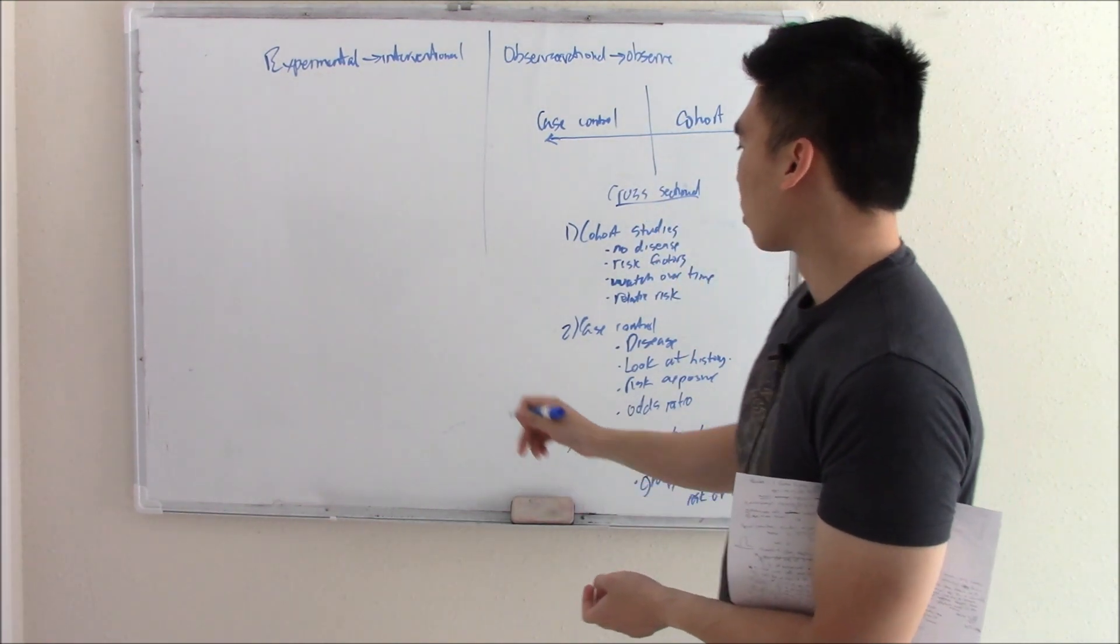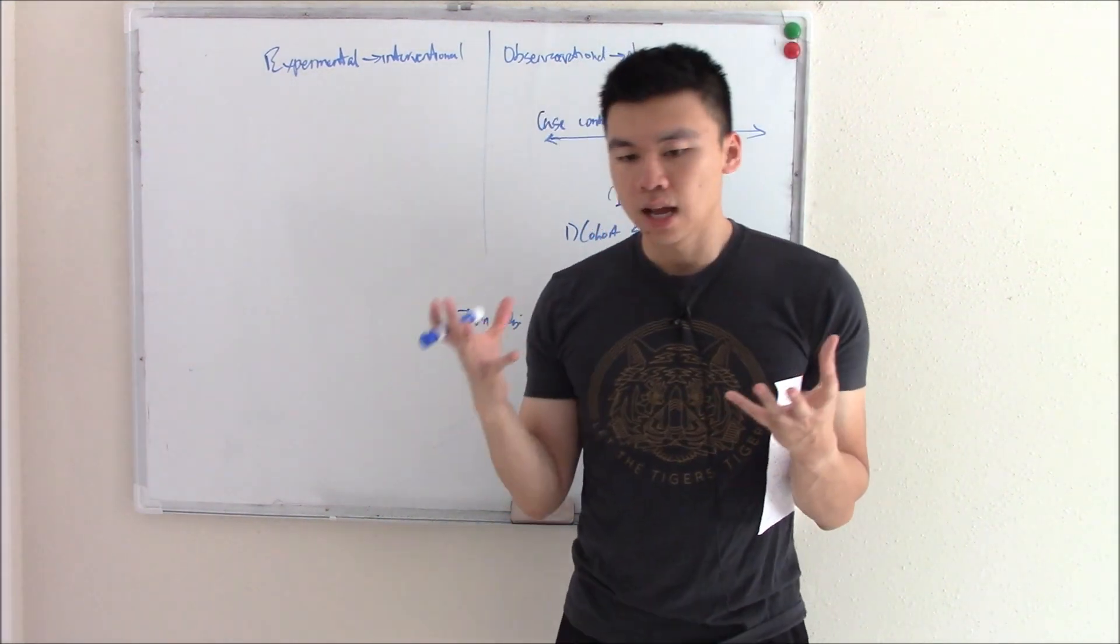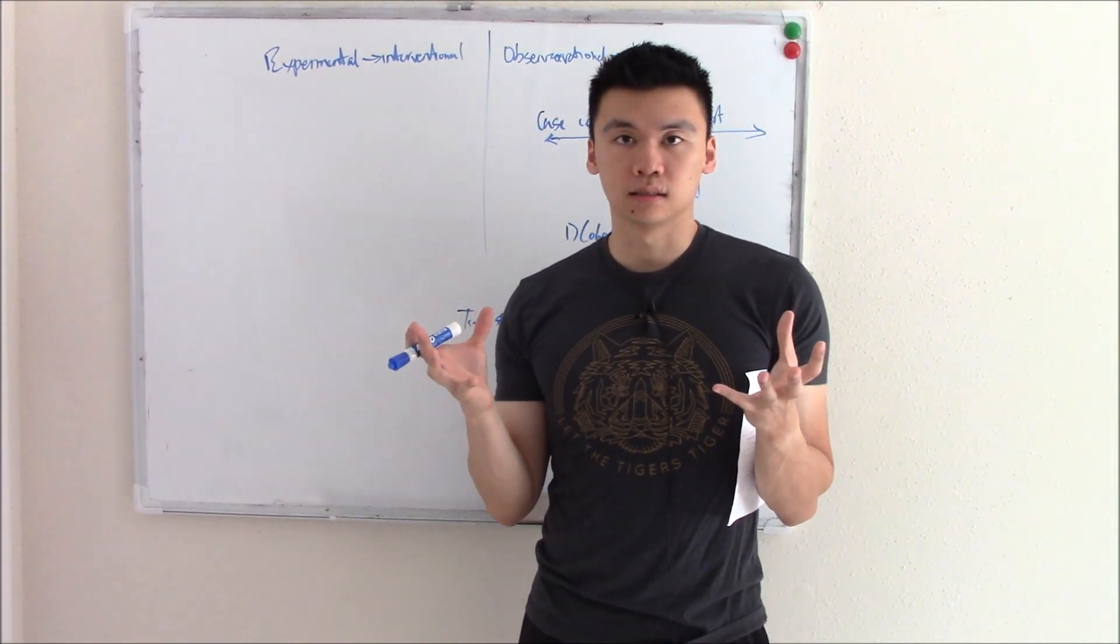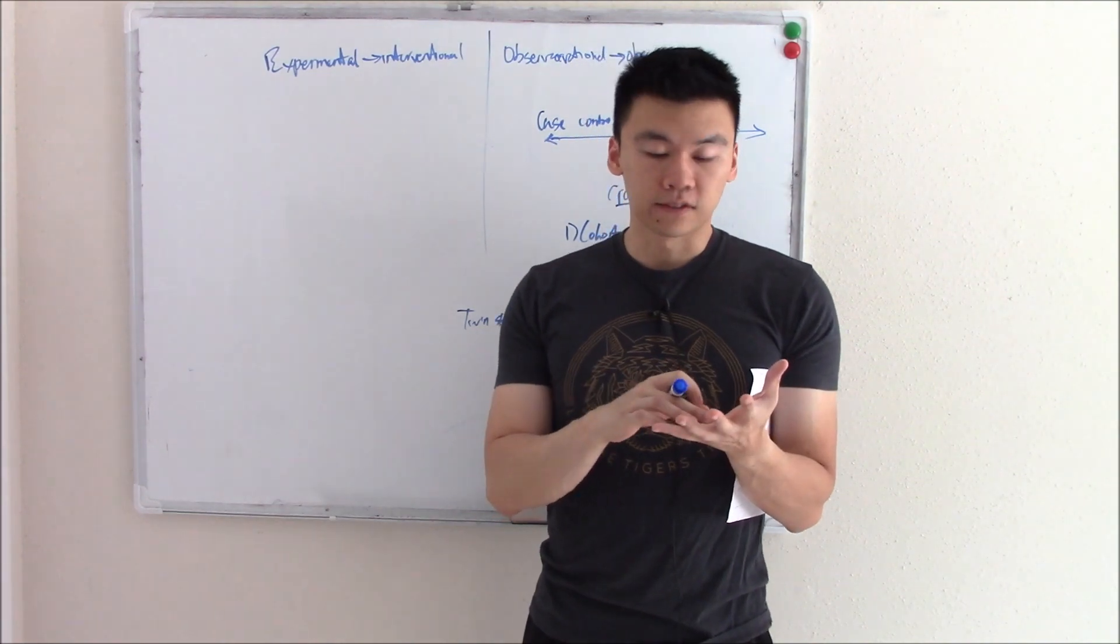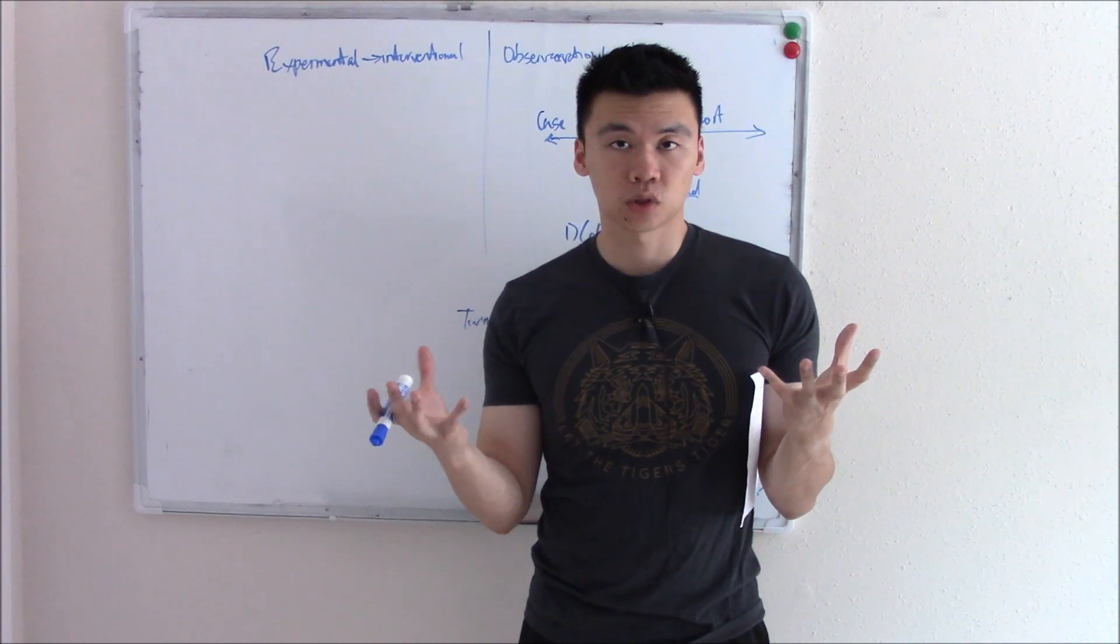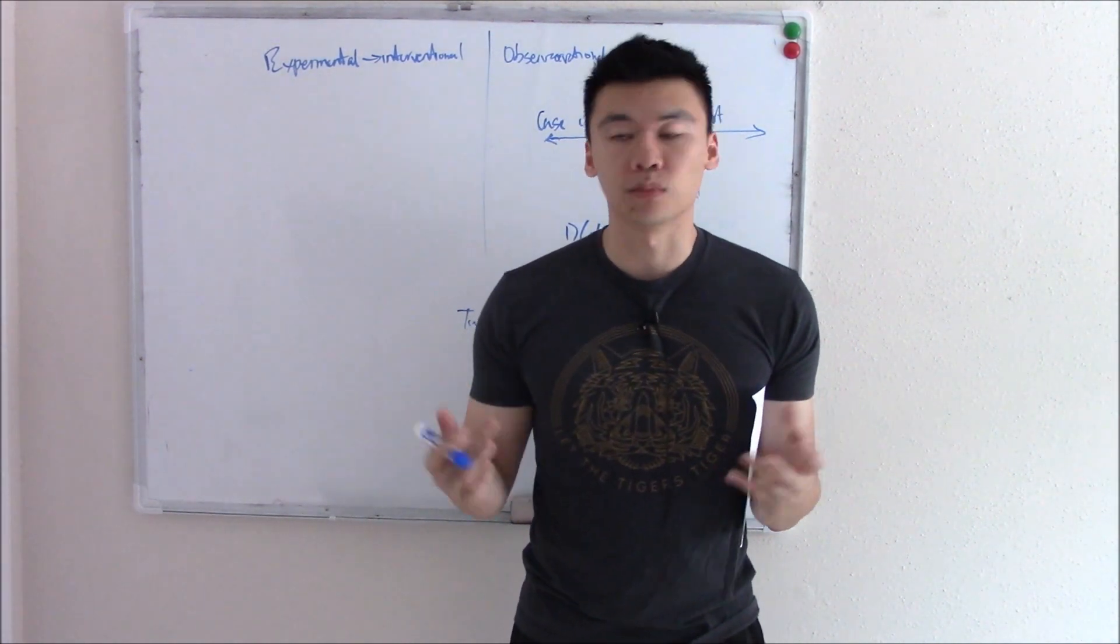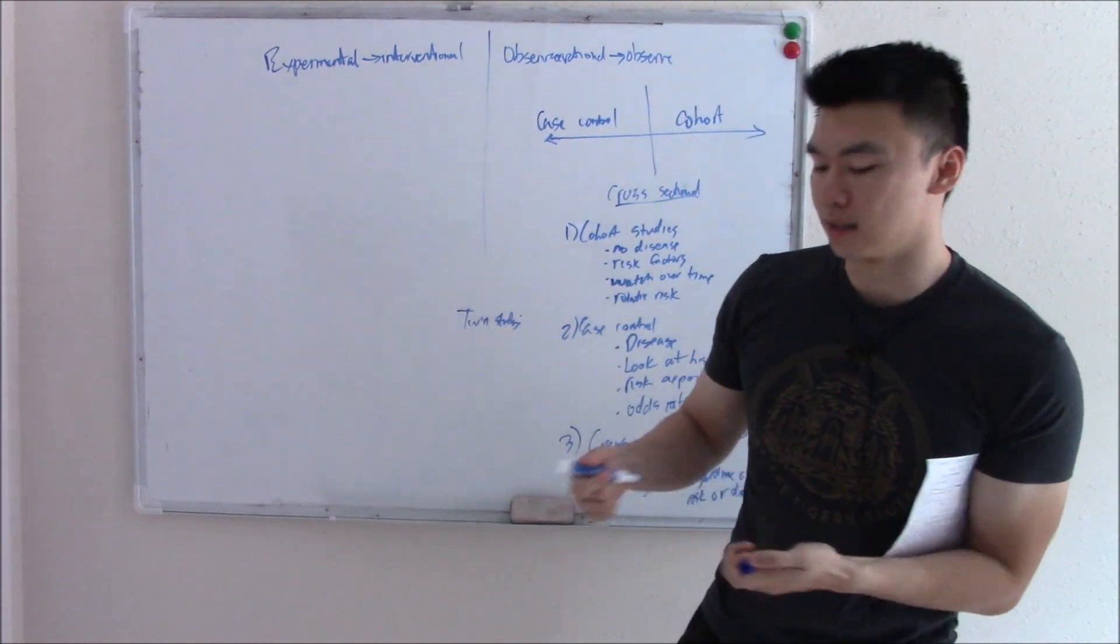That is the traditional observational studies. Now there are some miscellaneous ones that kind of fall in this category. There's something called twin study. This is when you look at a set of twins and then determine whether or not a disease is genetic, if there's a genetic component to it. So in schizophrenia, if one twin has it, there's a higher chance of the other twin having it. That's how we figured out that some diseases have a genetic component to it.